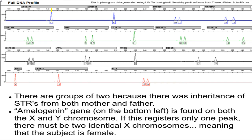D8S1179 - that's the name of this short tandem repeat. We put all these short tandem repeat samples on the electrophoresis column. This one will come out over here, but it might come here or here - different people will have it come out in different places. For this sample it came out over here. If there were more tandem repeats, it would have come out a little bit faster, say over here.